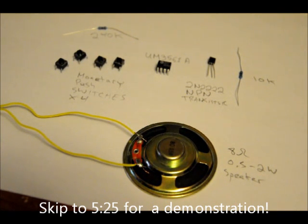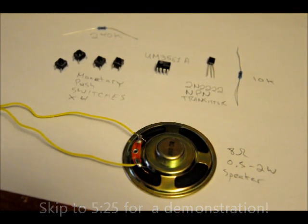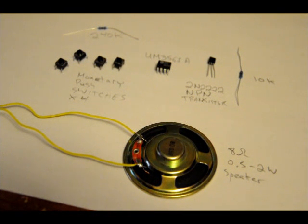What you're going to need is an 8 ohm 0.5 to 2 watt speaker, a 10k resistor, a 2N2222 NPN transistor, a DIP8 UM3561A IC through hole, a 240k ohm resistor, and four momentary push switches.